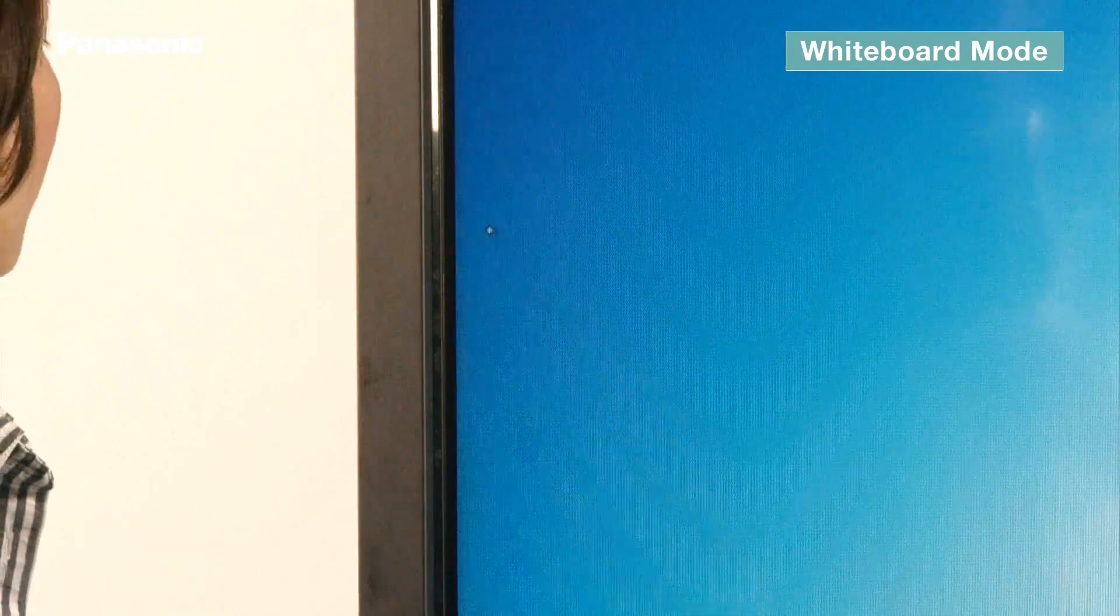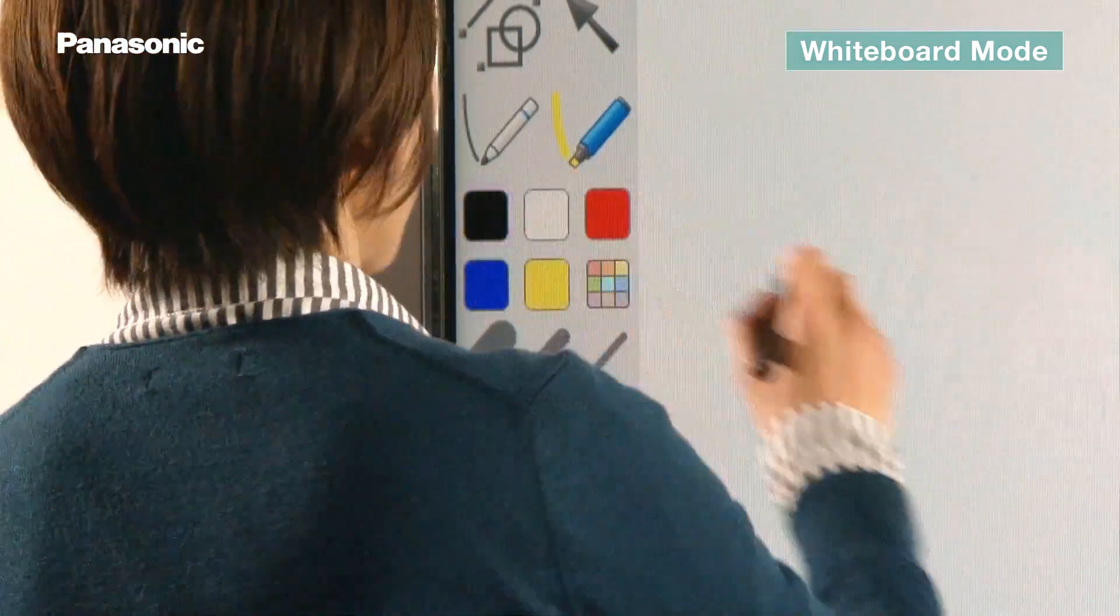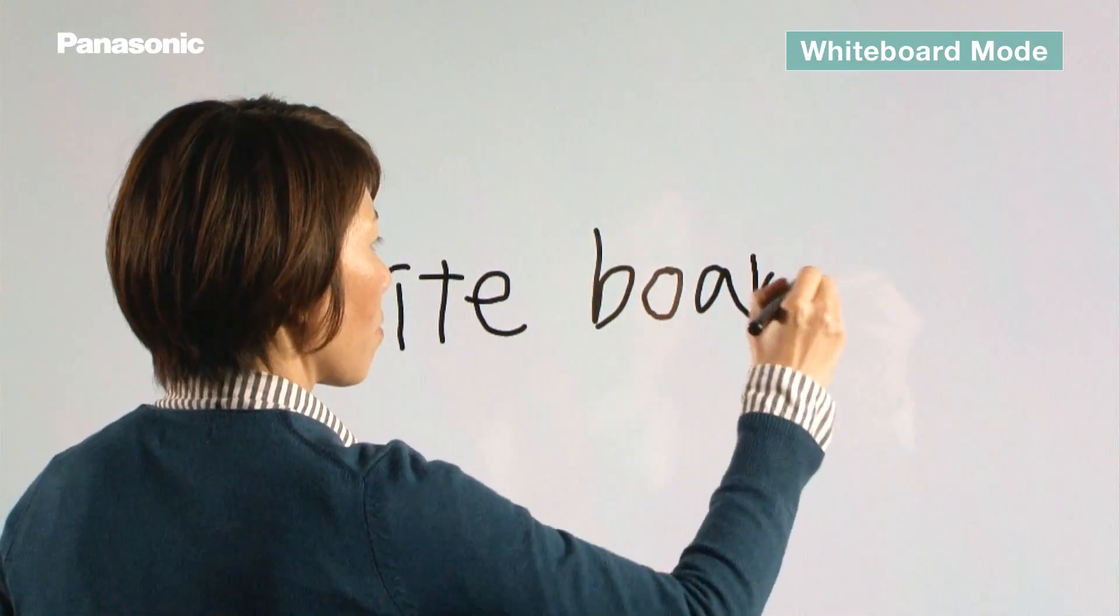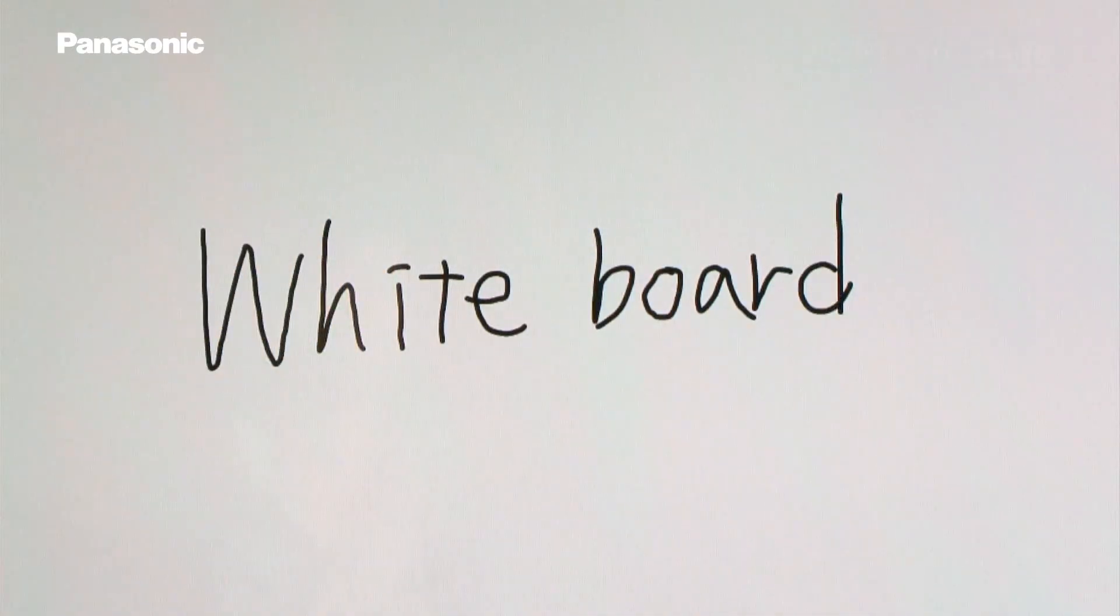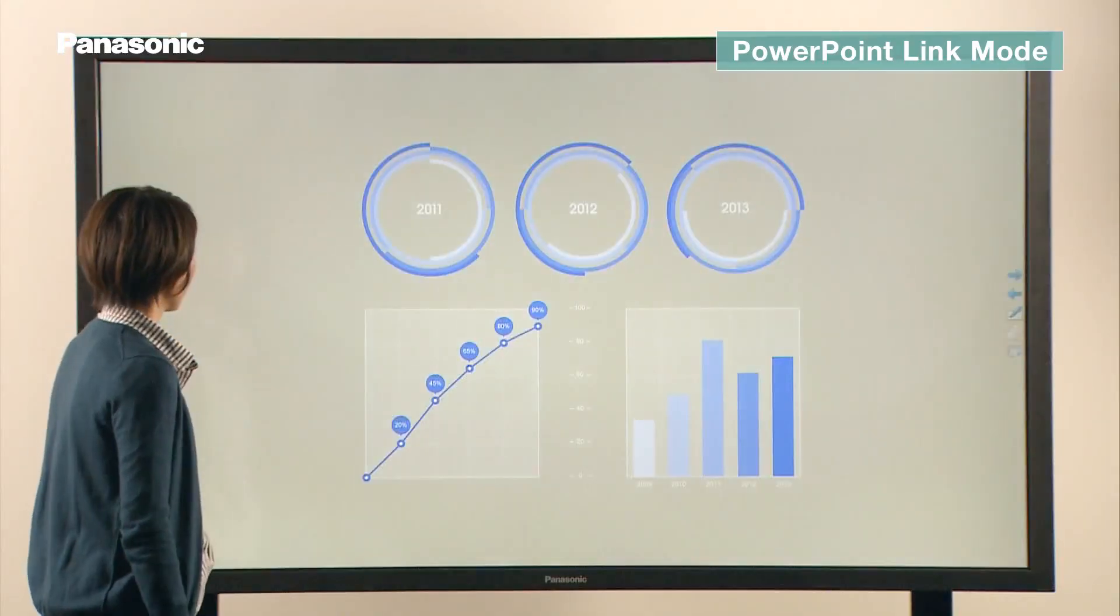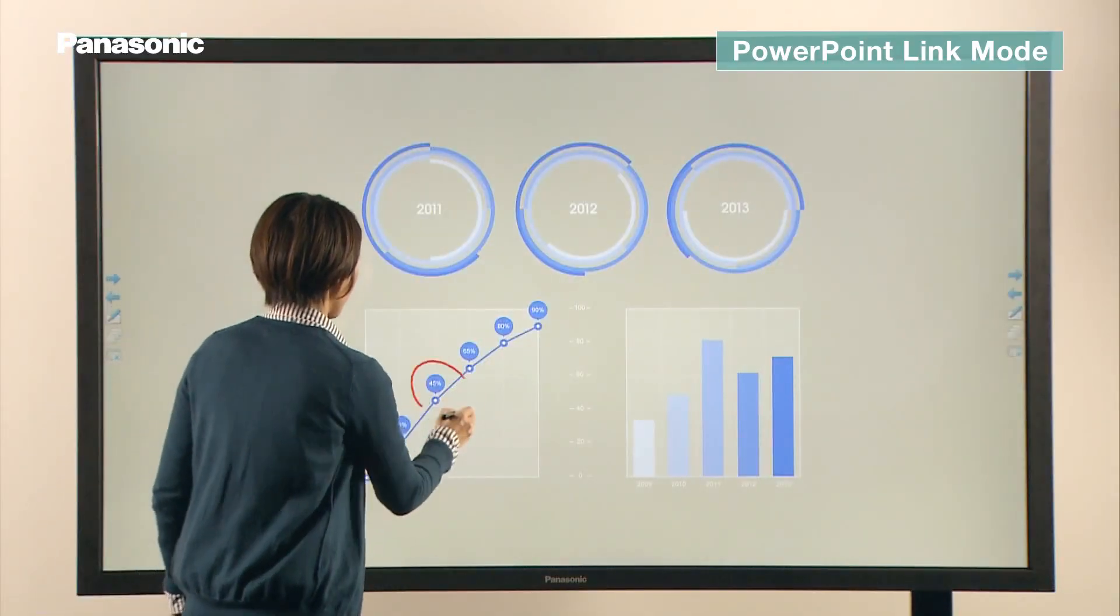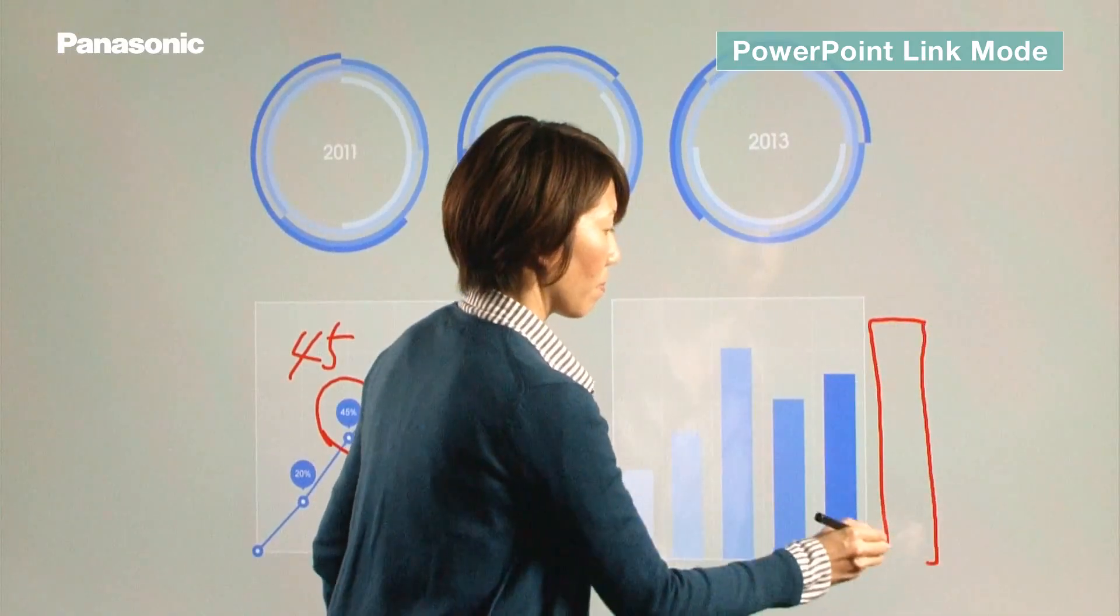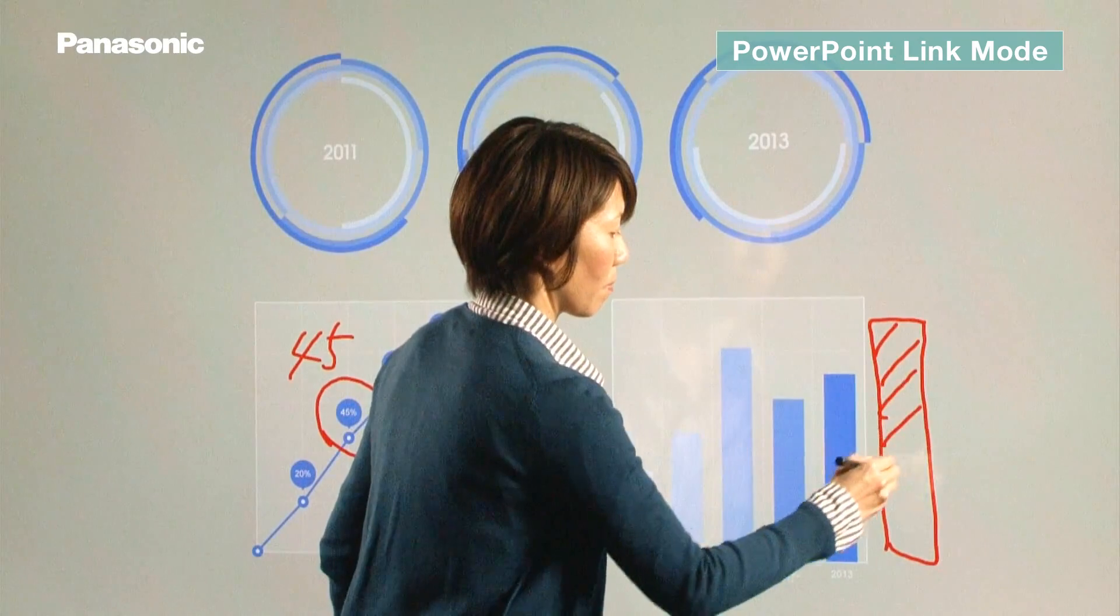In whiteboard mode, you can write and draw using an expanded set of tools. If you want to load and display PowerPoint documents, PowerPoint link mode is most convenient. This mode lets you write and draw on documents and save them in PowerPoint format.